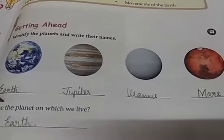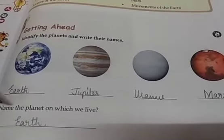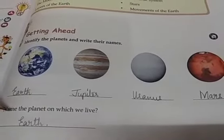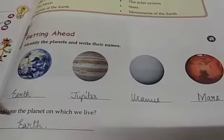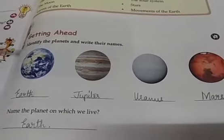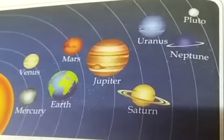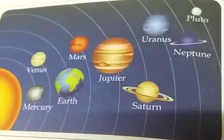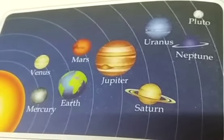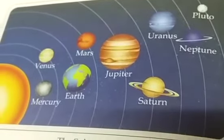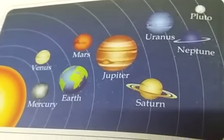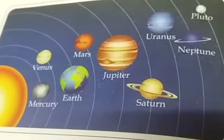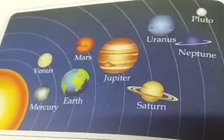Name the planet on which we live. We live on Earth. Earth is a planet on which we all live. What are planets? Planets are heavenly bodies that move around the sun in their fixed paths called orbits.